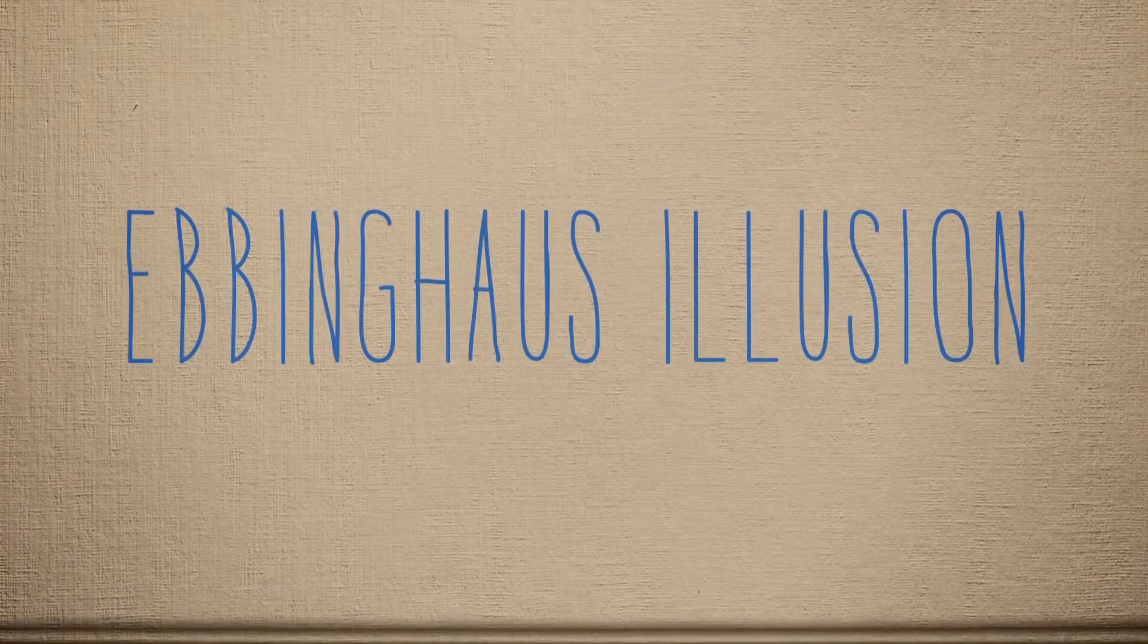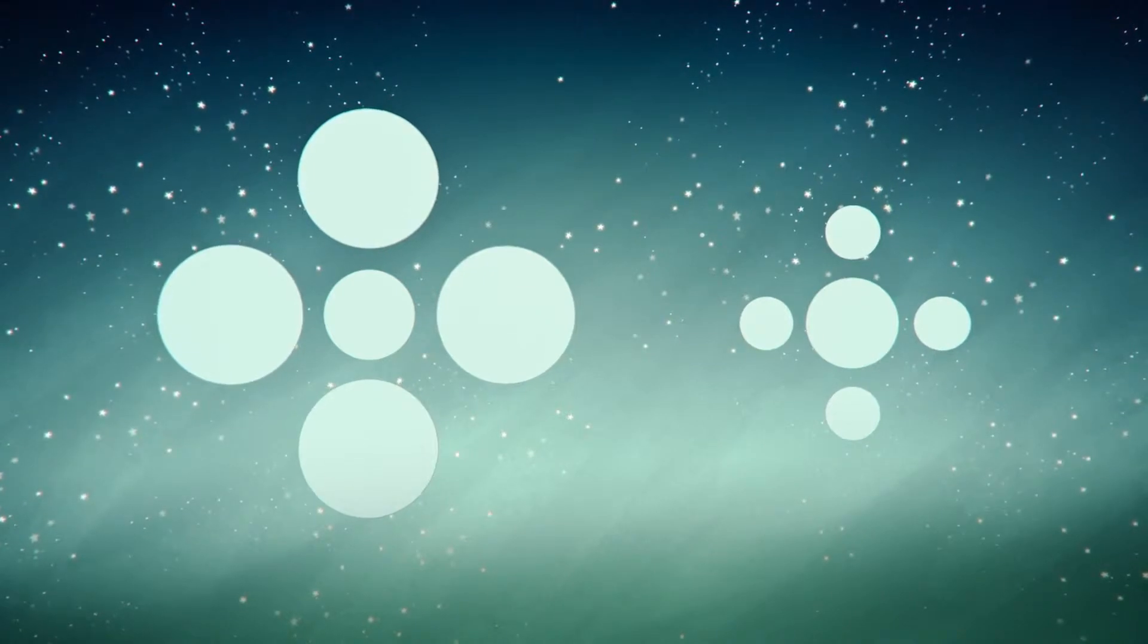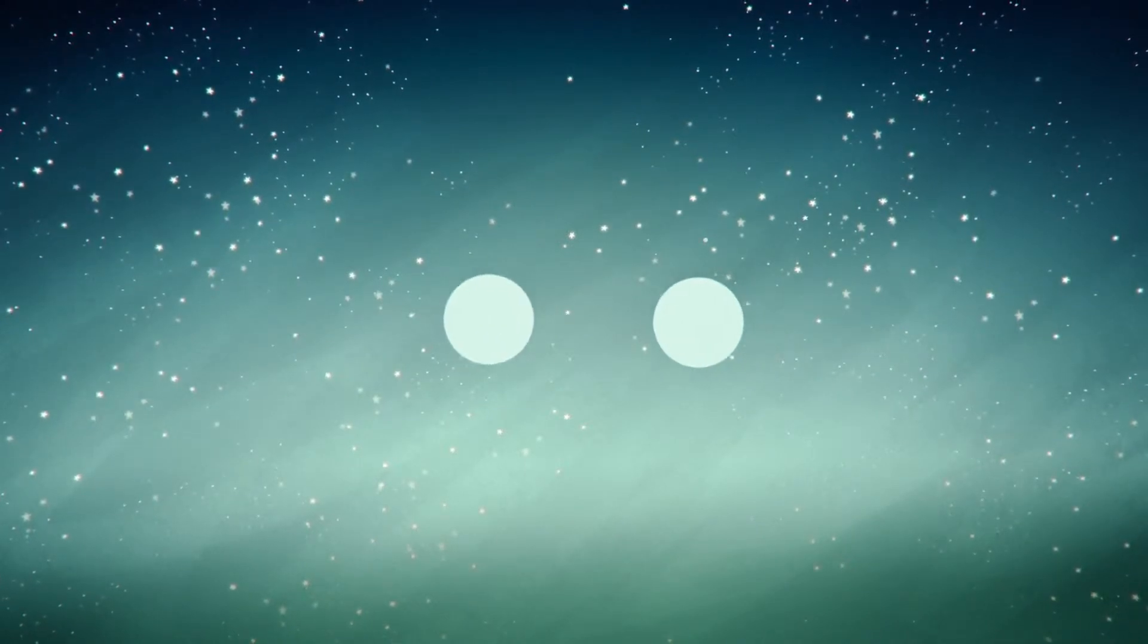One explanation is the Ebbinghaus illusion, where two identical objects look different because of the relative size of the objects they're surrounded by. Here, the two center circles are actually the same size.